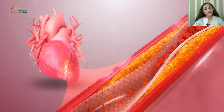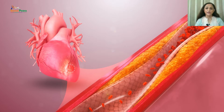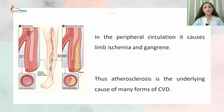Arterial changes begin in infancy and progress asymptomatically throughout adulthood. The clinical outcome of impaired arterial function arising from atherosclerosis depends upon the location of the impairment. In coronary arteries, atherosclerosis can cause angina, myocardial infarction, and sudden death. In cerebral arteries, it can cause stroke and transient ischemic attacks. In peripheral circulation, it can cause limb ischemia and gangrene. Therefore, atherosclerosis is the underlying cause of many forms of cardiovascular diseases.